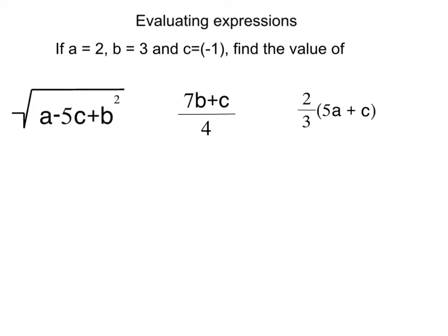Here's the second lot of expressions we're going to evaluate. First thing I do, as you remember, is that I replace the variables with the numbers. So a is 2 minus 5 times negative 1, put that in brackets, plus b squared. Well, b is 3, so 3 squared.